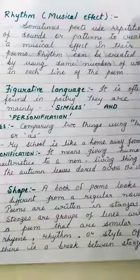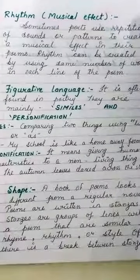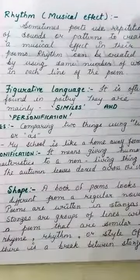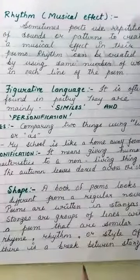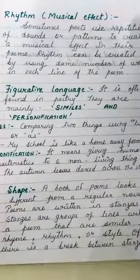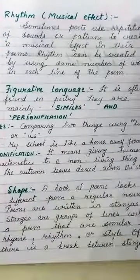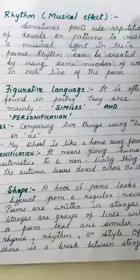Next is rhythm, or musical effect. Sometimes poets use repetition of sounds or patterns to create a musical effect in their poems. Rhythm is created by using the same number of words in every line of a poem.